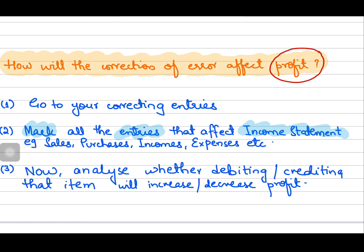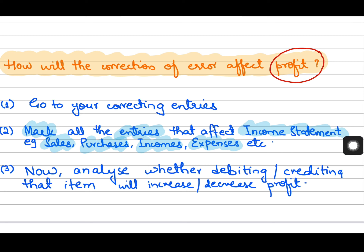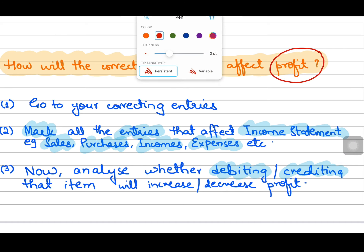By 'affect the income statement,' I mean all accounts that become part of your income statement — for instance, your sales account, sales returns account, purchases, incomes, expenses, opening inventory, or closing inventory. If you have used these accounts to make the correcting entry, then they will affect the profit because they become part of your income statement. Then you analyze whether debiting or crediting that account will increase or decrease your profit.